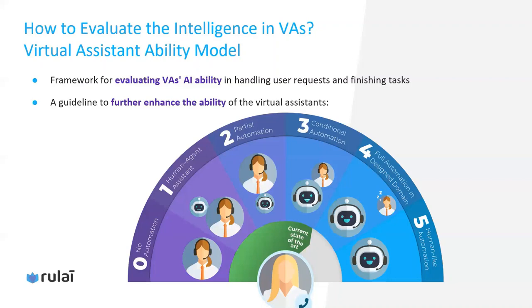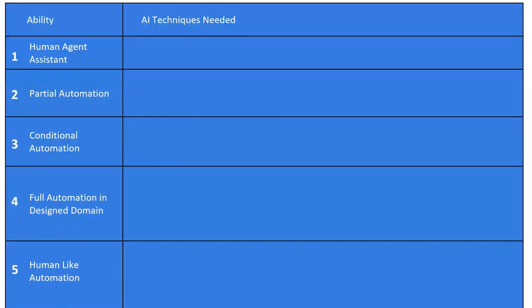Level four is called fully automation in the designed domain, where the virtual assistant operates independently most of the time and human agents are available to help but can work for other business units. Level five is called human-like automation, where the virtual assistant reaches human-level intelligence. Let me briefly talk about the technical breakthroughs needed to go to each level.